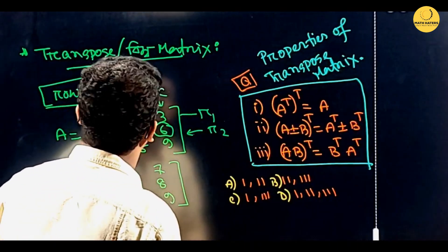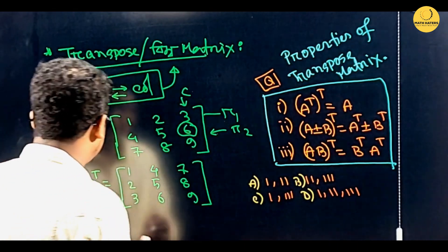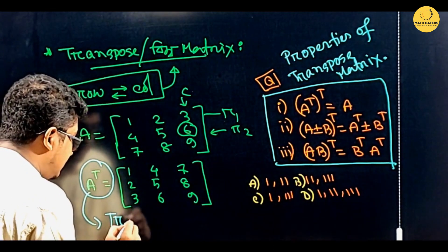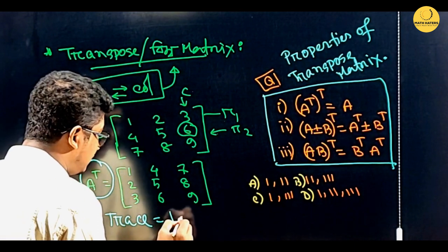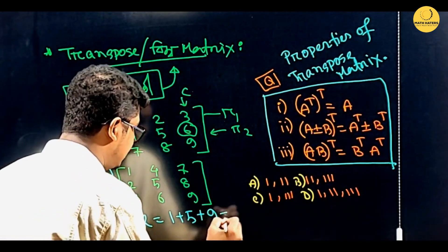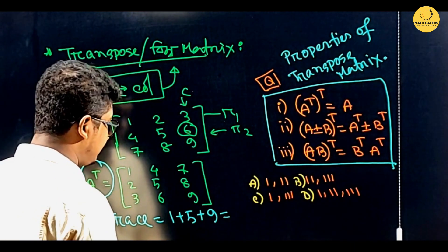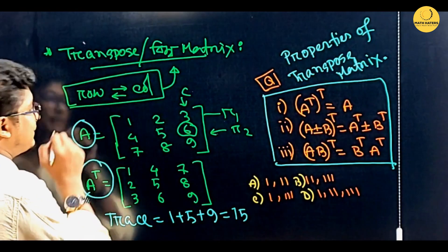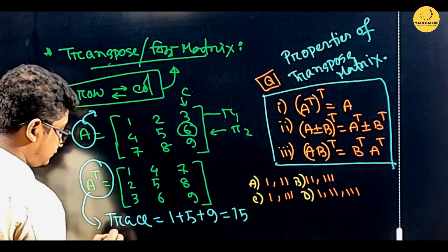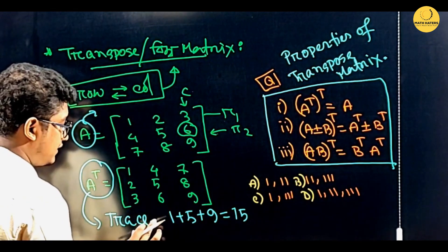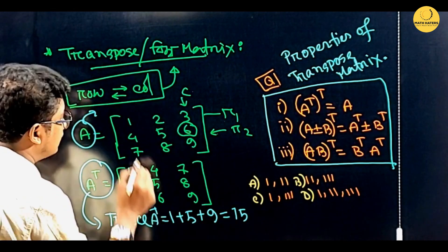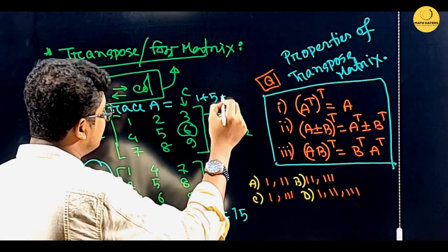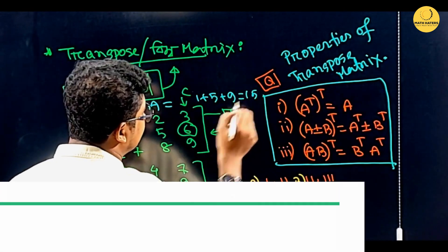Here we have the trace of matrix A: trace equals 1 plus 5 plus 9, equal to 10. The trace of A to the power T equals the trace of A, which is 1 plus 5 plus 9, equal to 10.